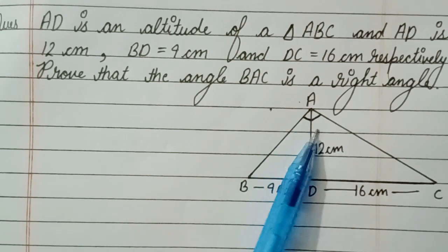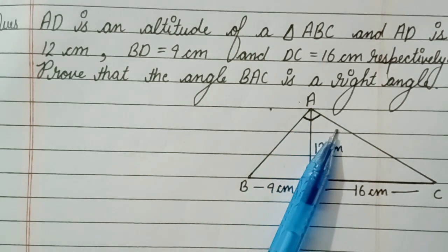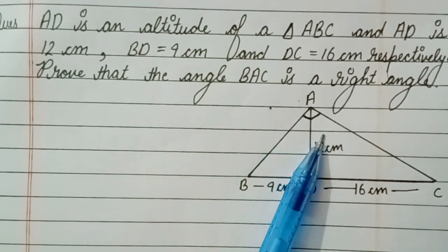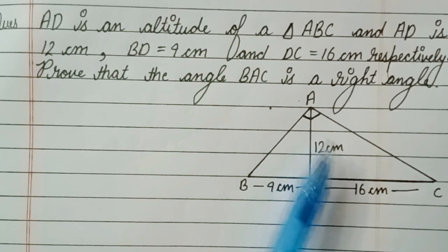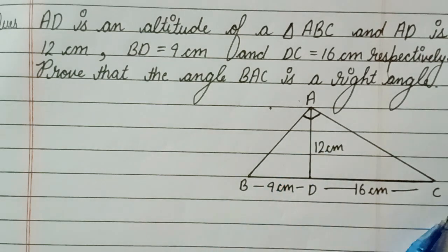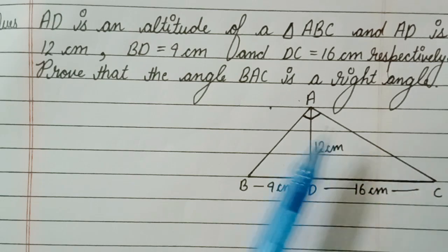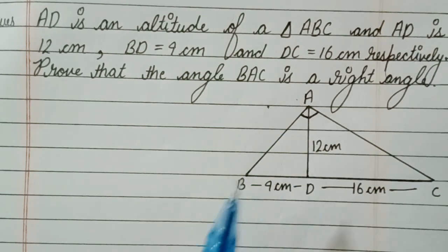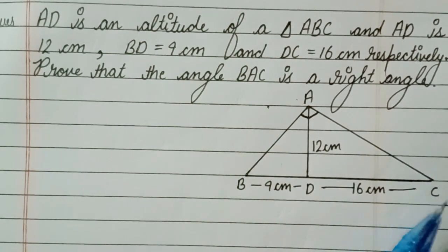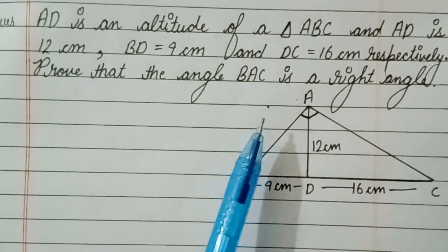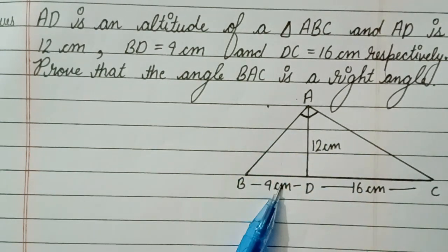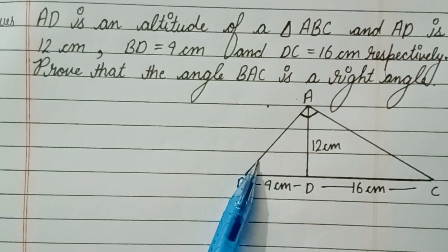If this angle is 90 degrees, then by Pythagoras theorem, BC should be the hypotenuse, and BC square equals AC square plus AB square. We have to find AC and AB.